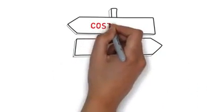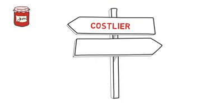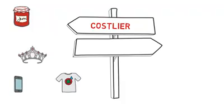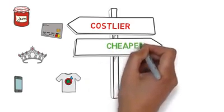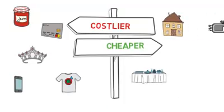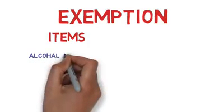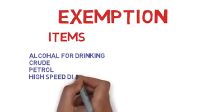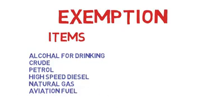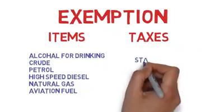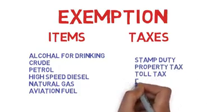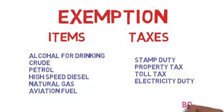After applying GST, the cost of some items will increase, such as packaged food, jewelry, ready-made garments, mobile services, credit card services etc. Some items will become cheaper, like home restaurant bills, AC, washing machine, microwave oven, small cars, and industries will face lower taxes. Items exempted from GST include alcohol for human consumption, petroleum products like crude petrol, high-speed diesel, natural gas, and aviation turbine fuel. Some taxes are also exempted: stamp duty, property tax, toll tax, electricity duty etc. Thank you for watching this video, please share and like.